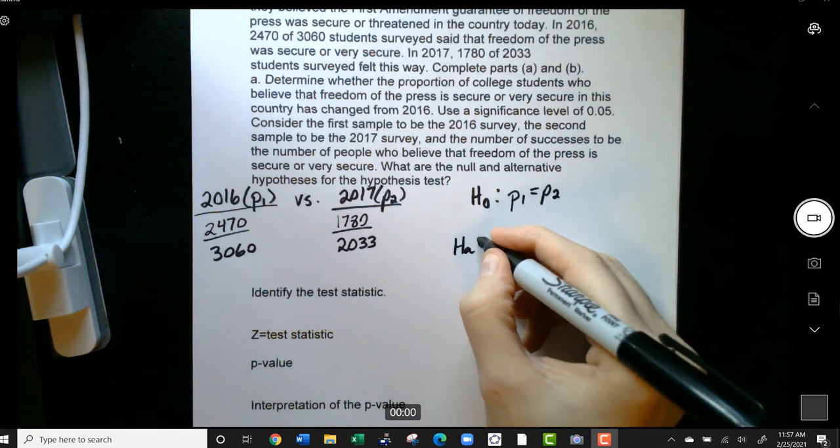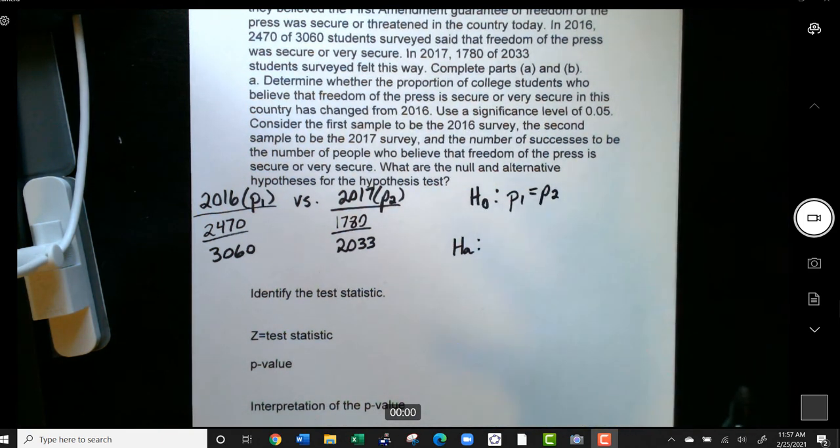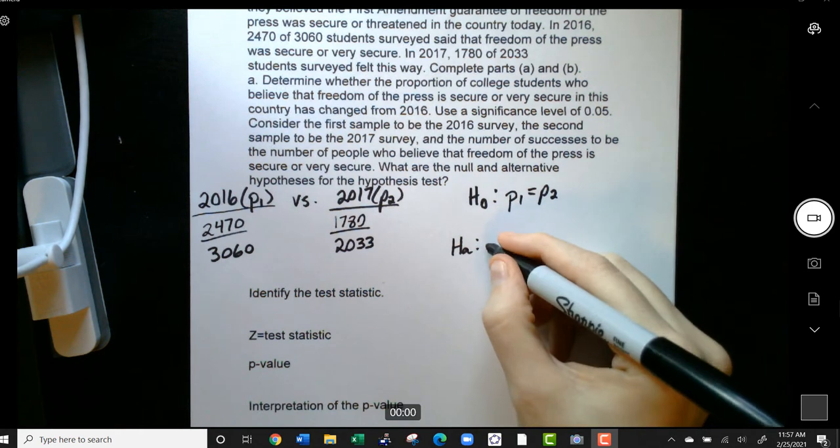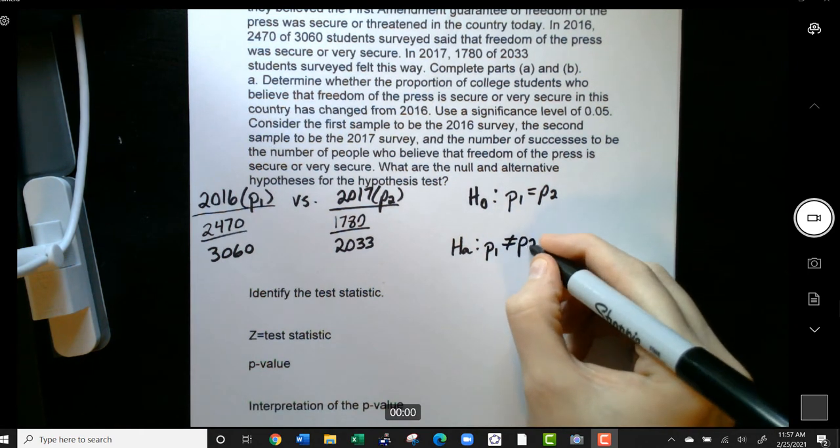Our alternative hypothesis, well, if we read the question again, there was no statement that led us to think that one population was going to be greater than or less than the other population. What that means is that we're probably just testing if they are different, aka not equal.